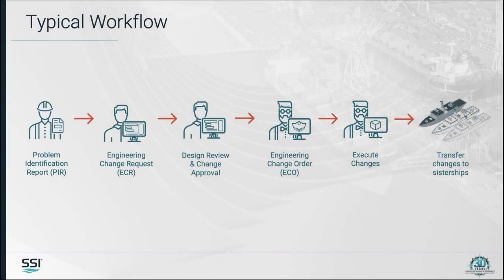The ECR refines possible solutions and decisions regarding the change. Following a design review and approval conducted between the design authority and review board, a solution is proposed and documented as an engineering change order, commonly called an ECO. Once the ECO is registered, the changes can be executed. The change could be registered using an ad-hoc process such as a spreadsheet, access database, or other disconnected process, or through a PLM system.